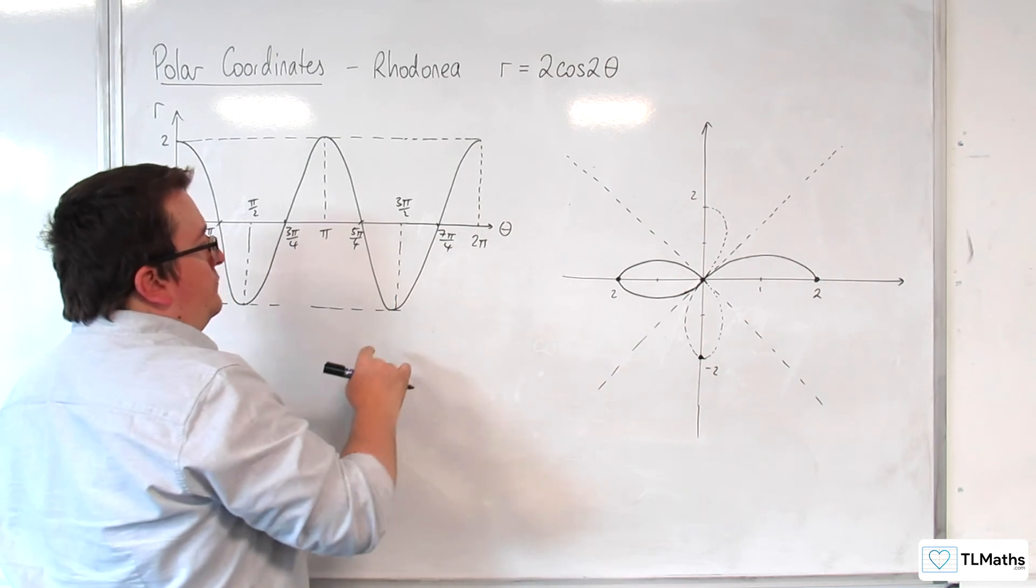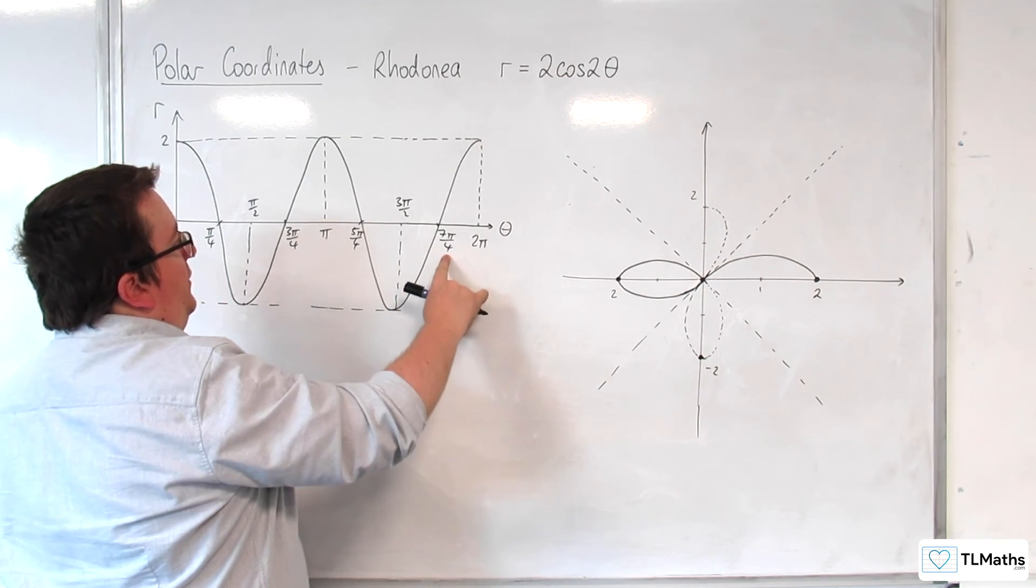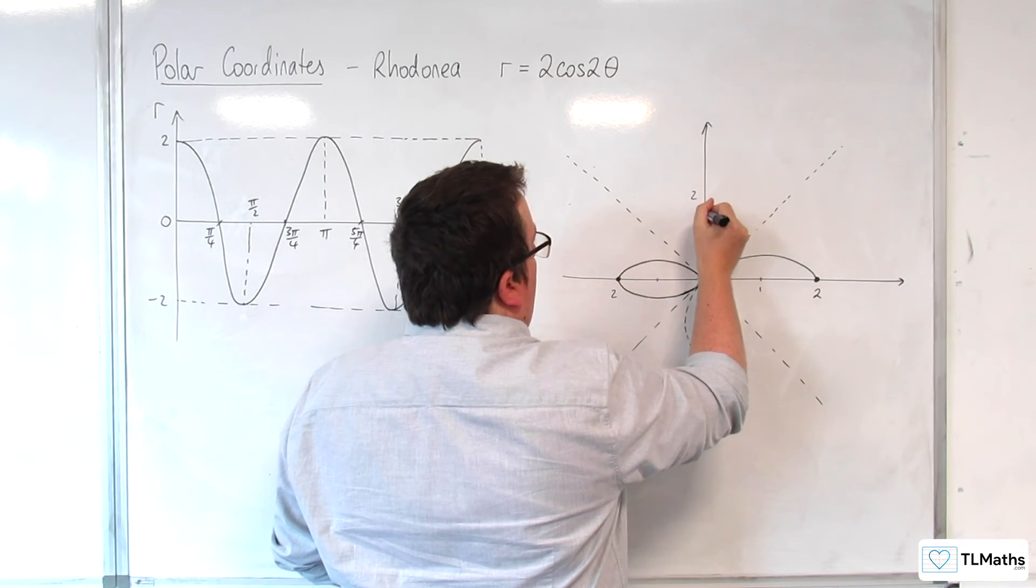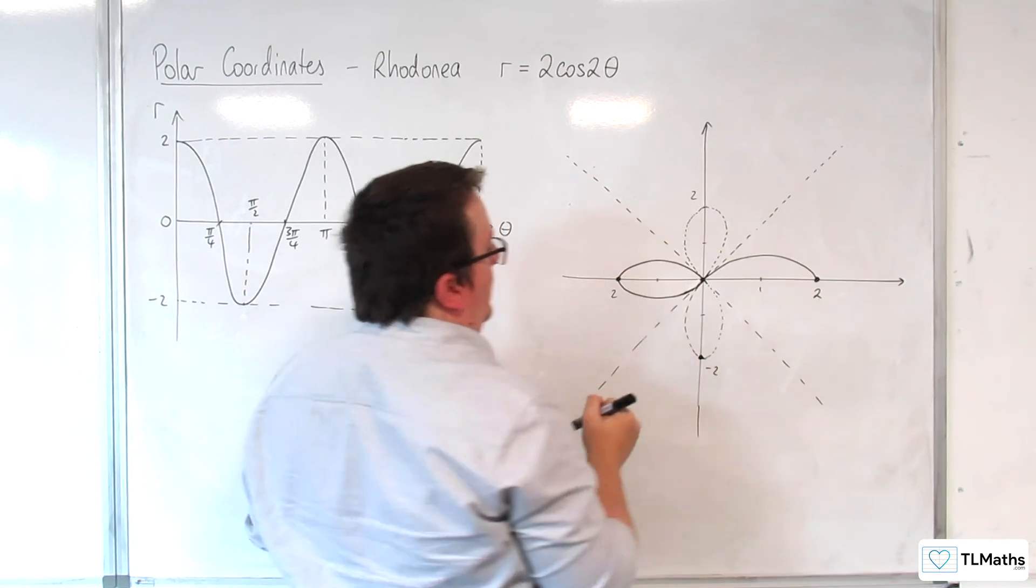And then, from 3 pi over 2 to 7 pi over 4, we're still in negative r. And so, the curve's coming back round here, like that.